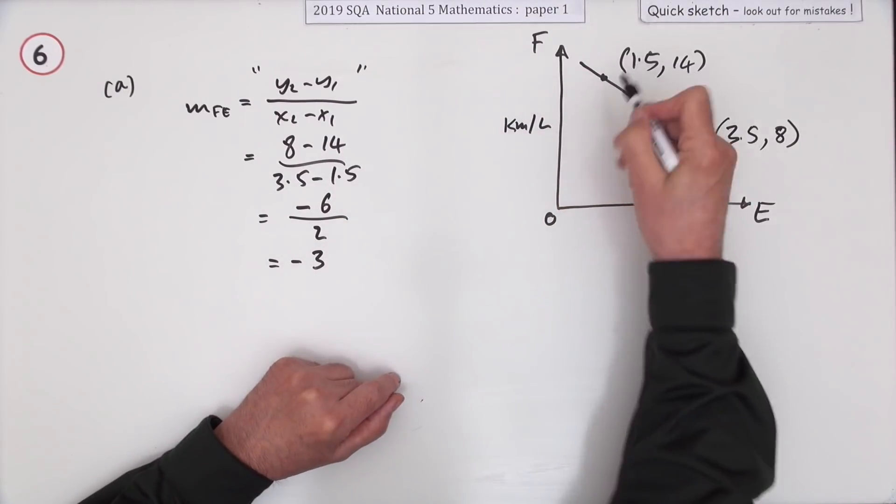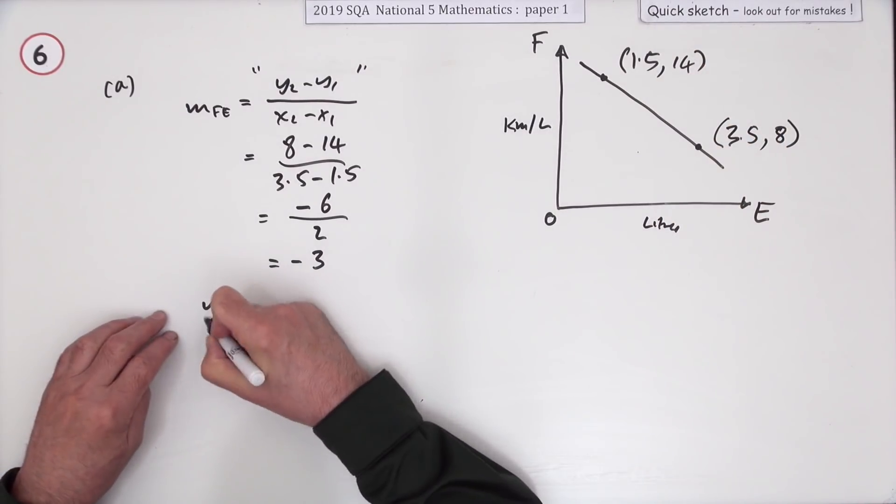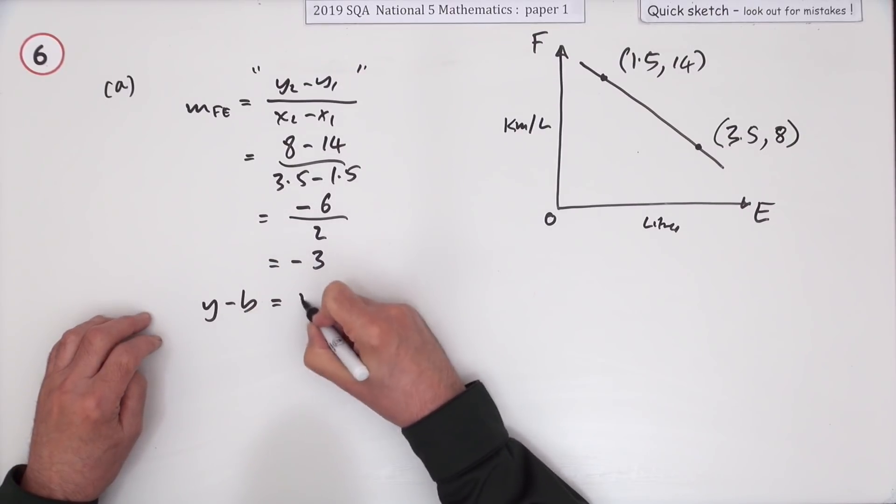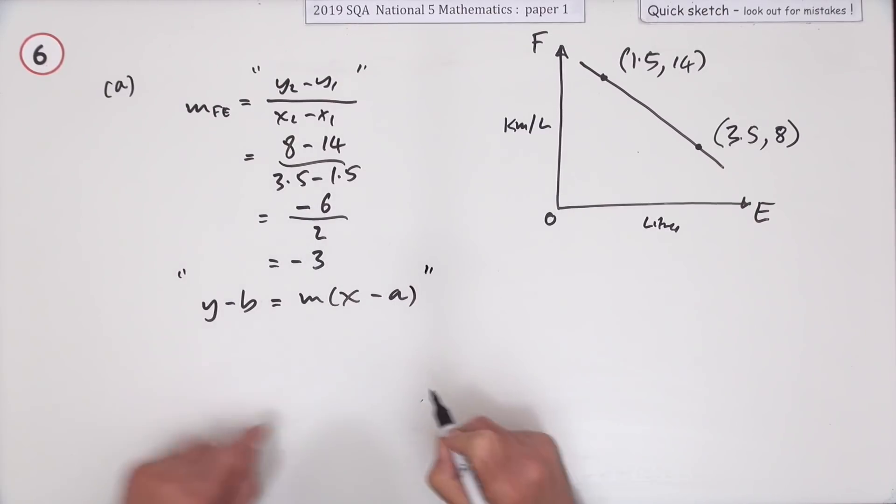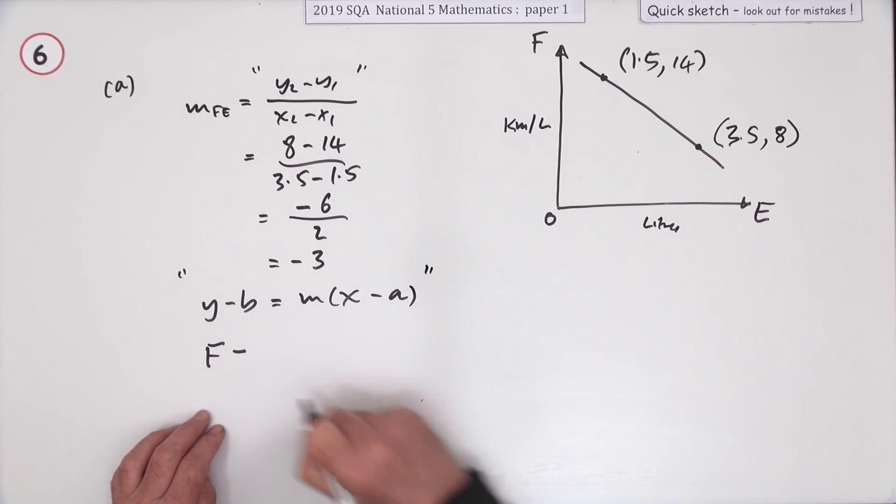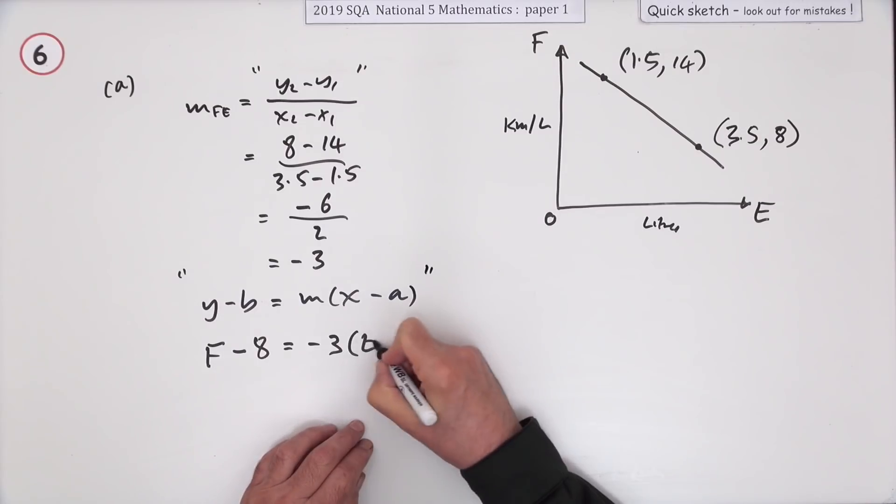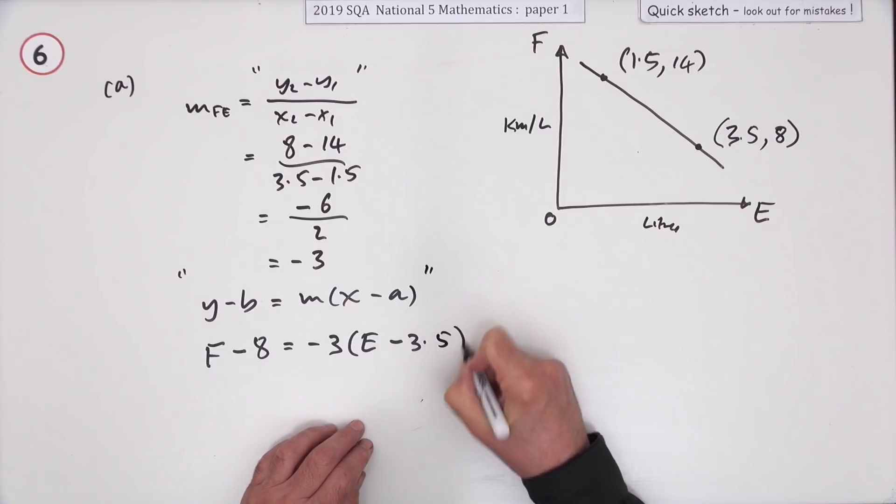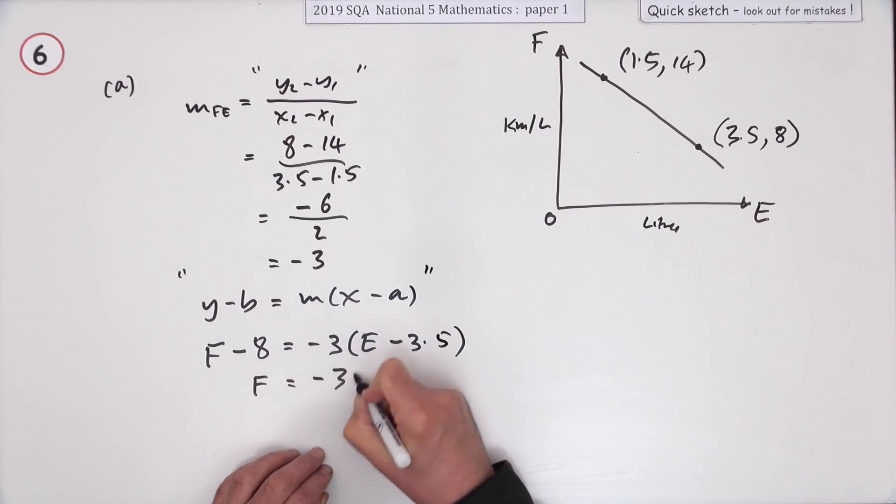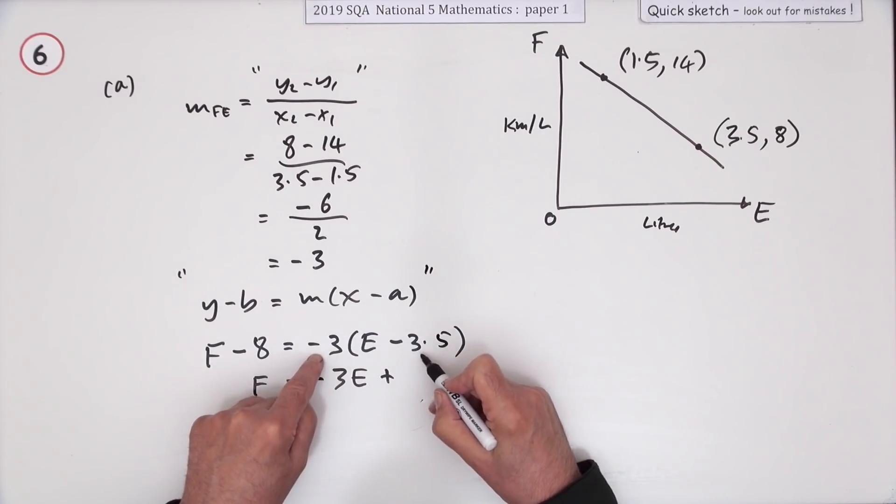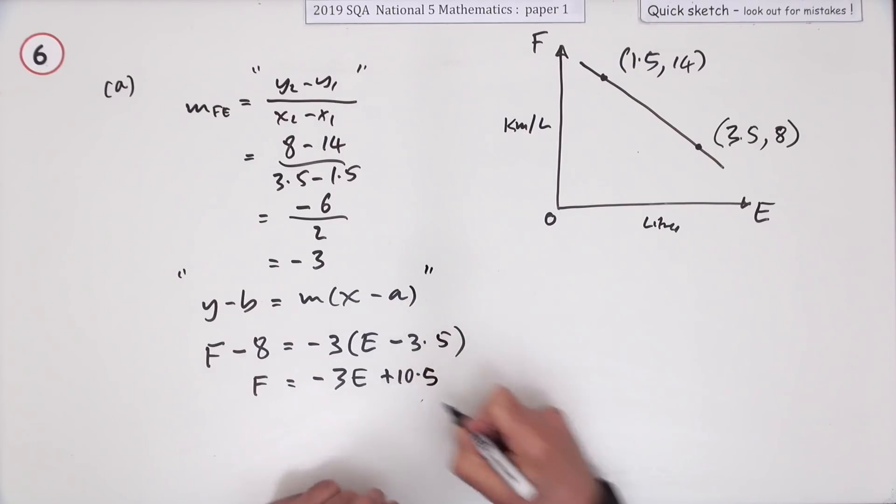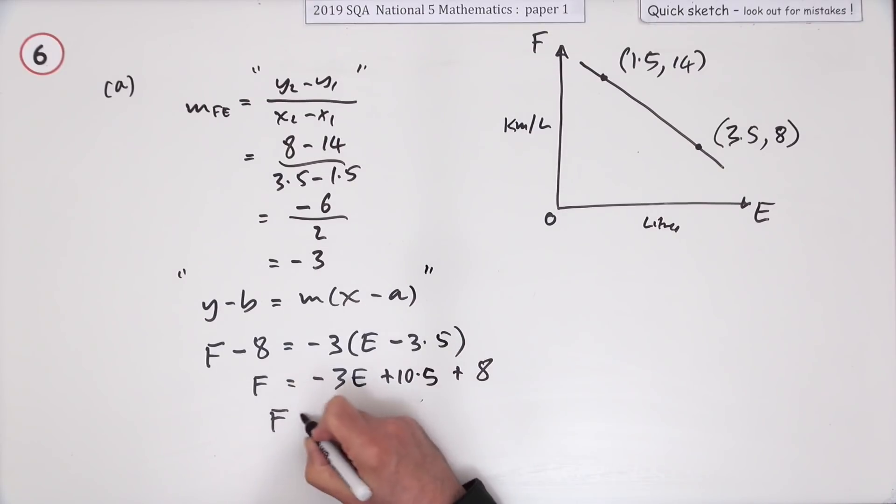The slope of that line is negative 3. For every one along, it goes down 3. Now you can get its equation. You could use y minus b, even though there's no such thing. y minus b equals m times x minus a. I'll put that in brackets there, inverted commas, because I'll have to reinterpret them. Because it's not y. It's f. So when I write it down, I'm going to put f minus. I'll need to pick a point. I'll pick this one. f minus 8 is negative 3 times. And e is in the place of x minus 3.5. So f is going to be negative 3e. That bit's okay. Here's a wee bit of a nuisance here. I'm going to multiply this. 3 times 3.5. Well, the 3 fives are 15 and 1 over. That's 10.5. Negative times negative positive. But that's going to come across and join it as a plus 8. So here's my final equation. f is negative 3e plus 18.5.